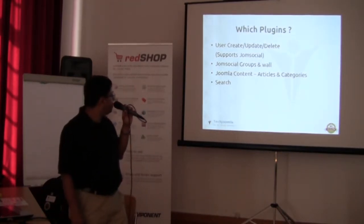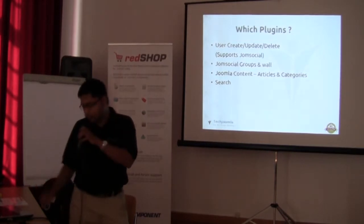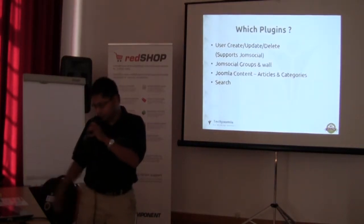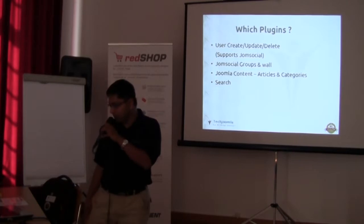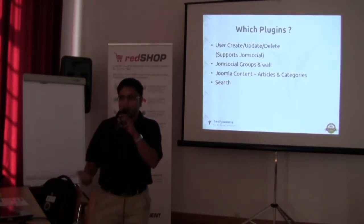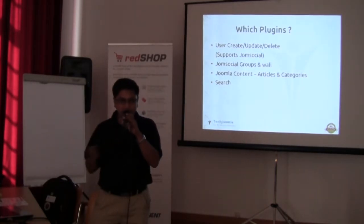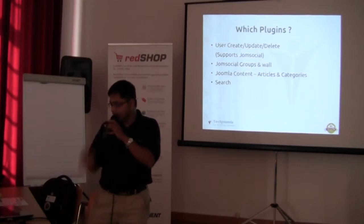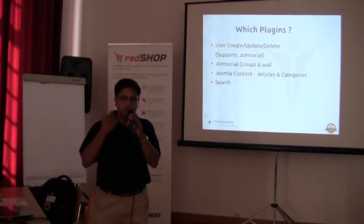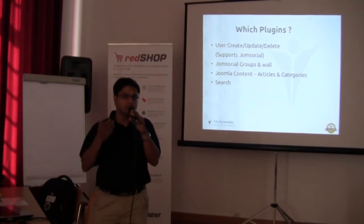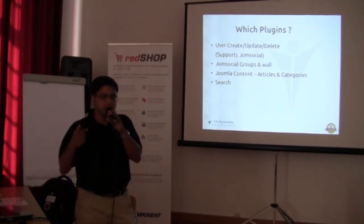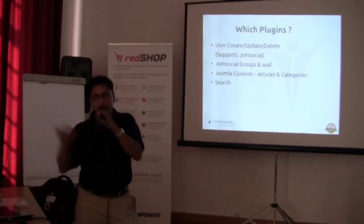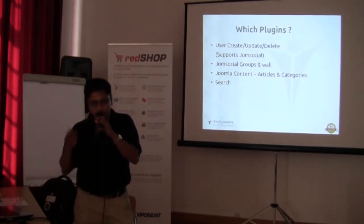This is a list of plugins that we have for now. We have create, update, and delete for users. We also support JomSocial and a few JomSocial features like the wall. We support popular Joomla content operations — creating articles, retrieving sections and categories. A very interesting plugin we have right now is the search plugin: when you do a regular Joomla search you search for a keyword and see results, and the same thing can be achieved through the REST search plugin. An external site or any other Joomla site can use your Joomla resources, search through them, and display the results.